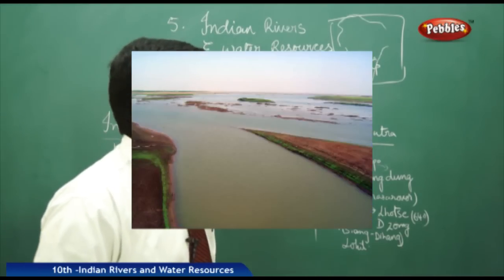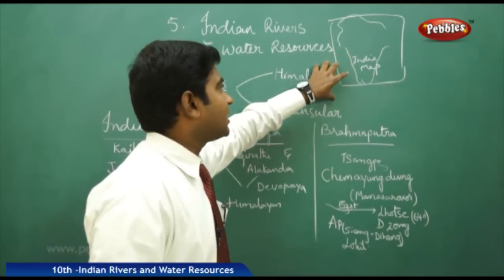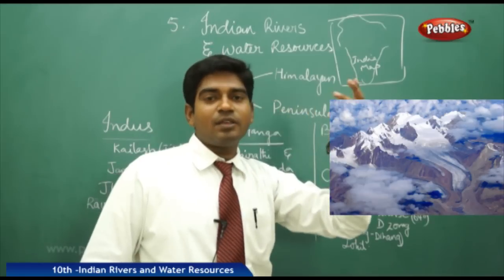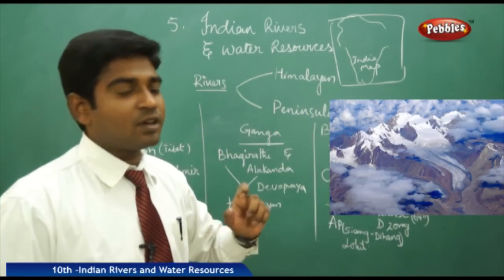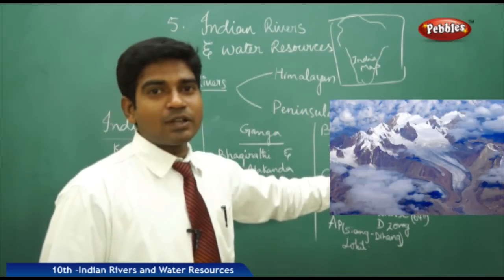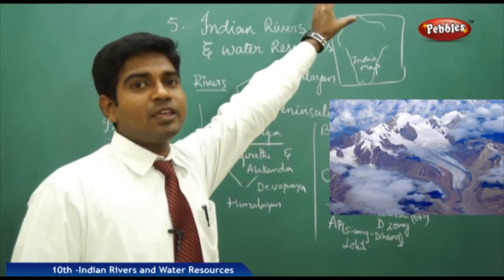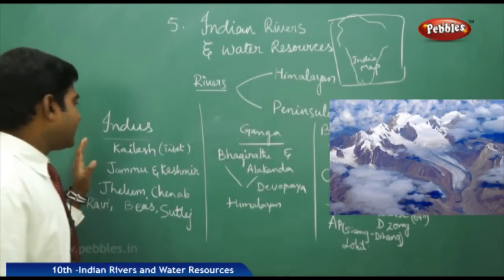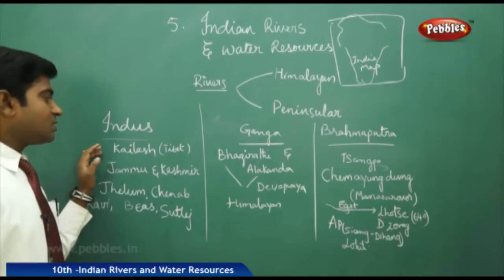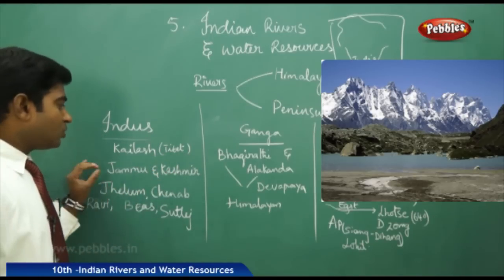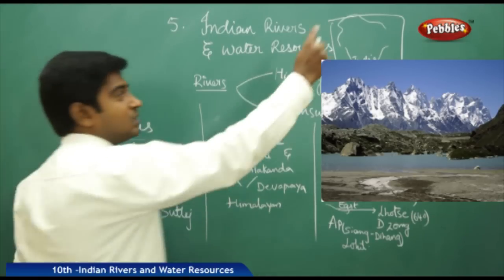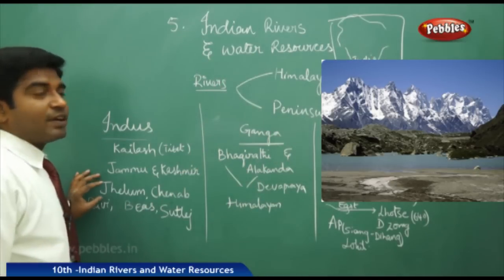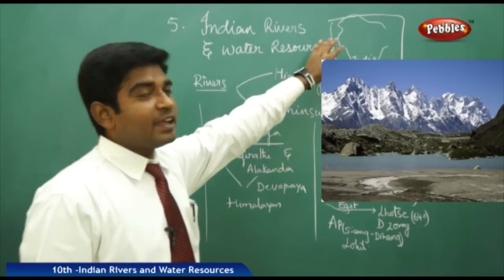Now let us discuss about the Himalayan rivers. As we have the Himalayas on the northern part, the three major rivers in the Himalayan northern belt — the Indus River, Ganga River, and Brahmaputra River — have their origins from the Himalayas, almost from nearby the same places. The Indus River originates near Kailash in Tibet and flows into India near the Jammu and Kashmir region.